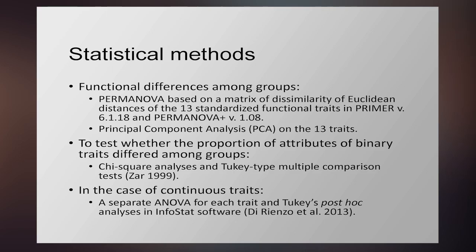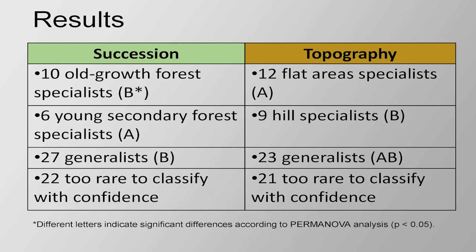Now for some of our results. On the left we have results for the different successional plots — differences based on successional time, or time since disturbance — and on the right we have results based on topography. For succession, the multinomial analysis gave us 10 species that were old-growth forest specialists, 6 that were young secondary forest specialists, 27 generalists, and 22 species that were too rare to classify with confidence. In terms of topography, we distinguished 12 species that were flat area specialists, 9 species that were hill specialists, 23 generalists, and 21 that were too rare to classify with confidence.